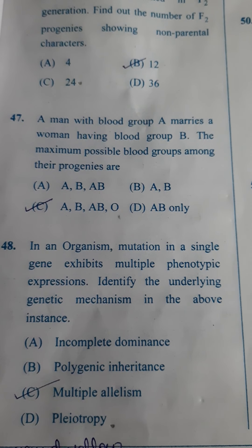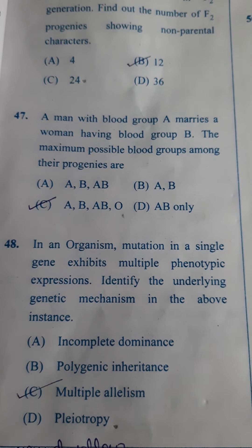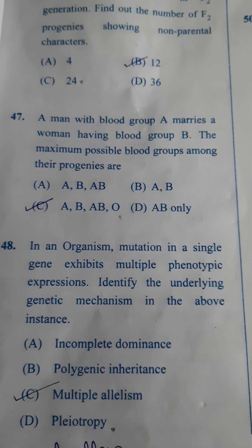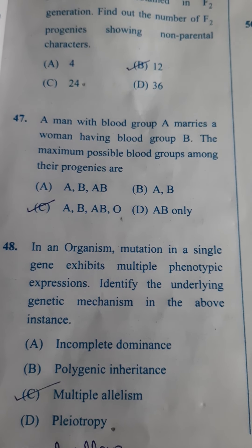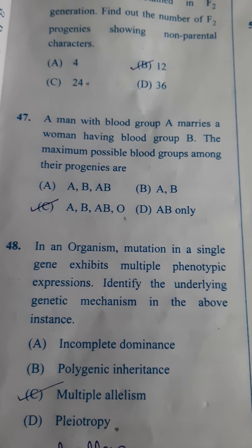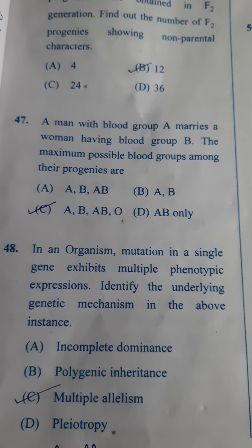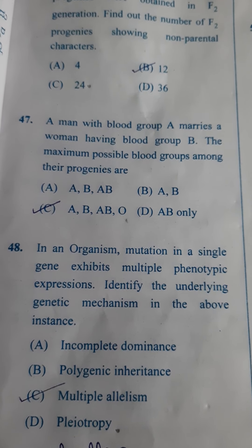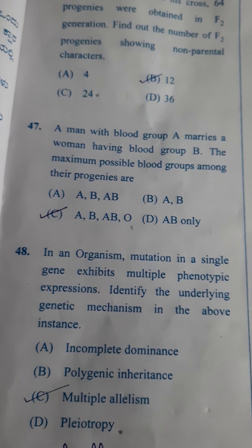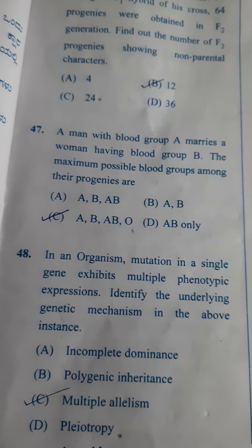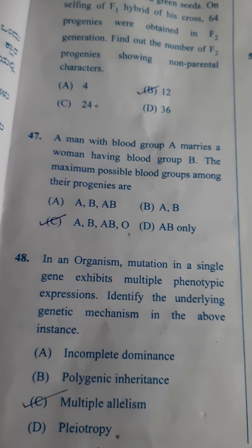Next: In an organism, mutation in a single gene exhibits multiple phenotypic expression — one gene giving different phenotypic characters. Identify the underlying genetic mechanism. This is purely called pleiotropy, where a single mutation gives you many characters — one gene controlling many characters. So the answer is D.